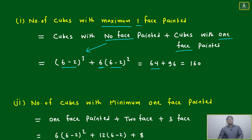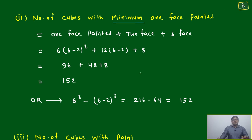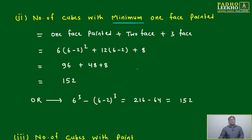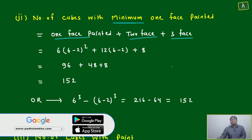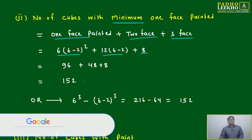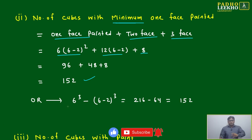The number of cubes with no face painted is 64 and one face painted is 96, giving a total of 160. Now for minimum one face painted: one face, two face, and three face painted are all considered because minimum one face means at least one. So that is 6×(6−2)² plus the edge and corner cubes, giving 152.